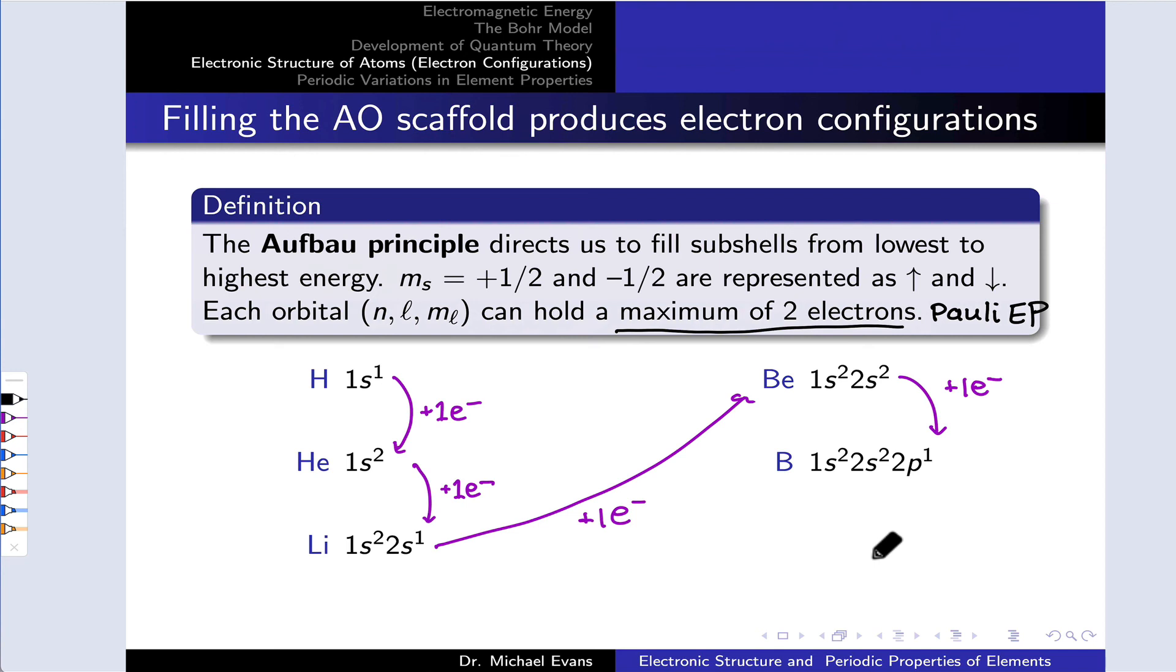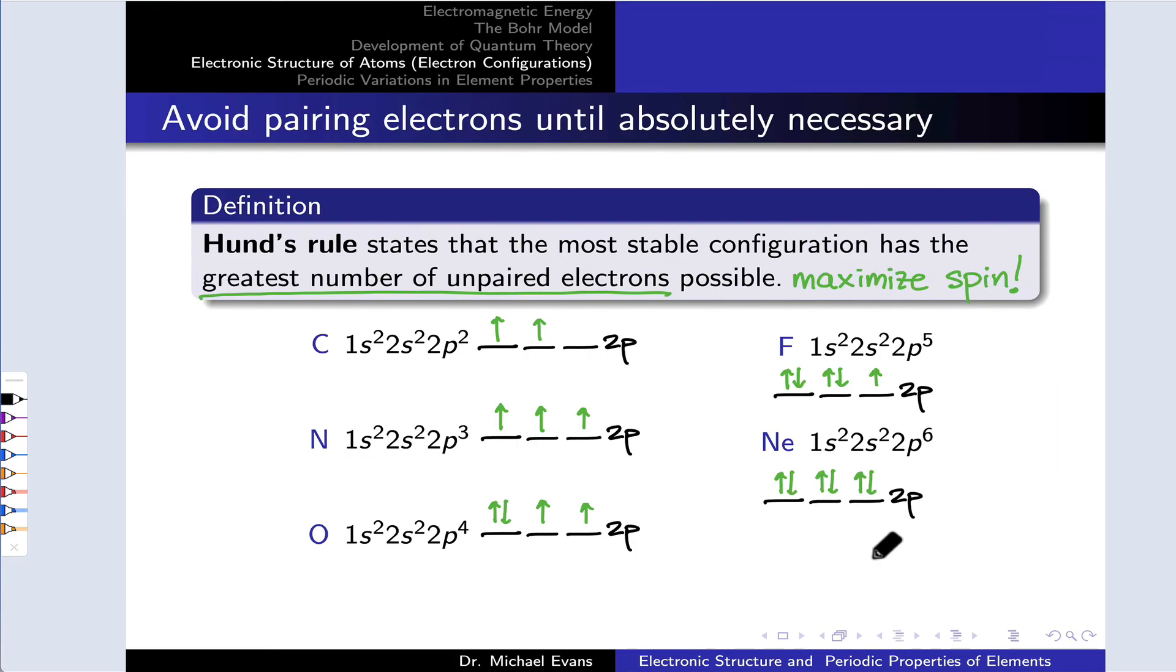When we get to those 2P subshells, now we've got degenerate orbitals, three different orbitals into which we could add electrons. And Hund's rule tells us to add electrons to keep them unpaired as long as we possibly can. Another way to put this is that we want to maximize the electron spin. Keep those spins parallel and pointing in the same direction as long as we can.